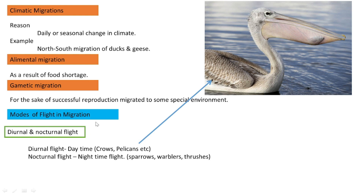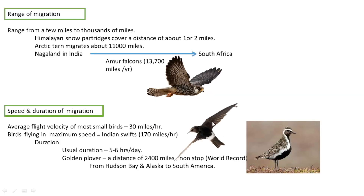Next we look at the modes of flight in migration — diurnal and nocturnal. Diurnal flight means flight that takes place during daytime; examples include cranes and pelicans. Nocturnal means flight during night time; examples include parrots, warblers, and thrushes.